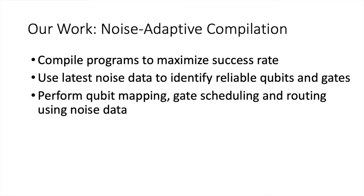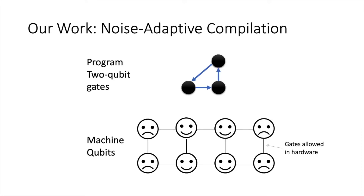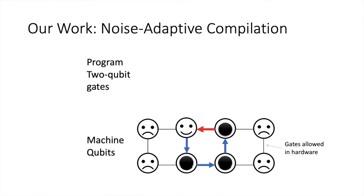The key idea behind our work is to execute programs using the best available hardware resources. To do this, our compiler uses noise data to maximize the success rate of a program execution. It maps the program qubits onto the most reliable hardware qubits, uses the best routing paths, and executes gates as soon as possible.